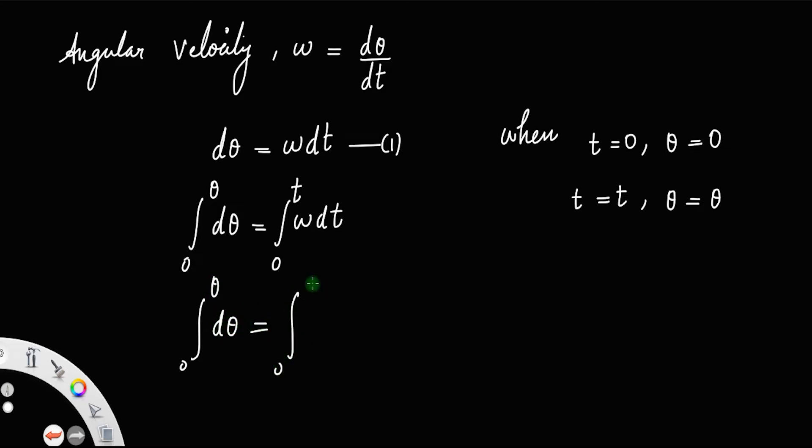From the first equation of rotational motion, ω = ω₀ + αt. We must substitute the value of omega here, that is, (ω₀ + αt)dt.